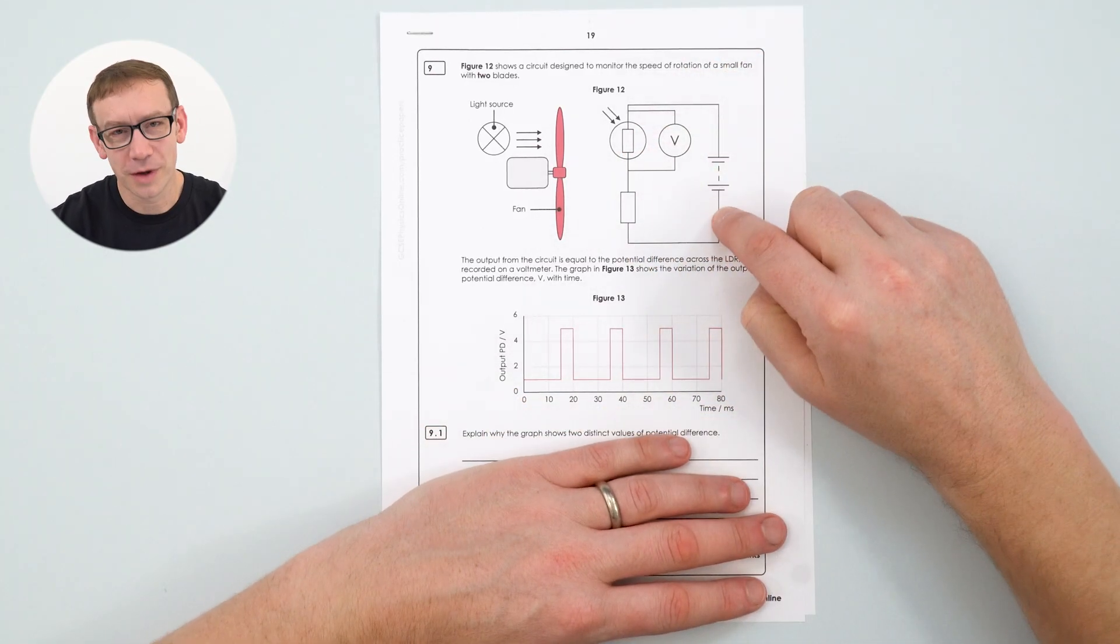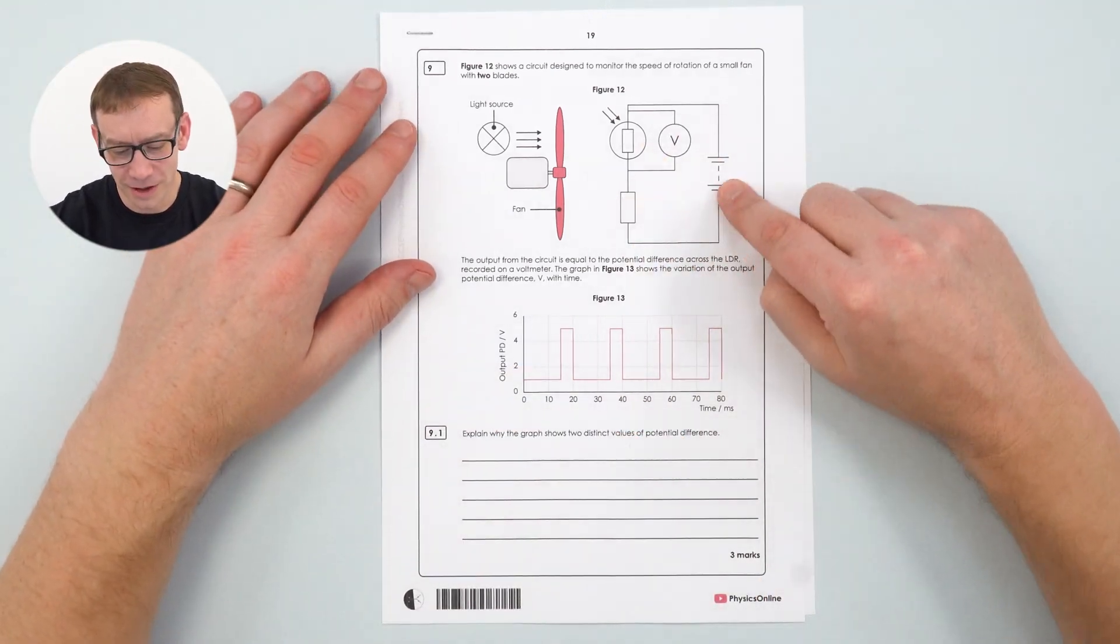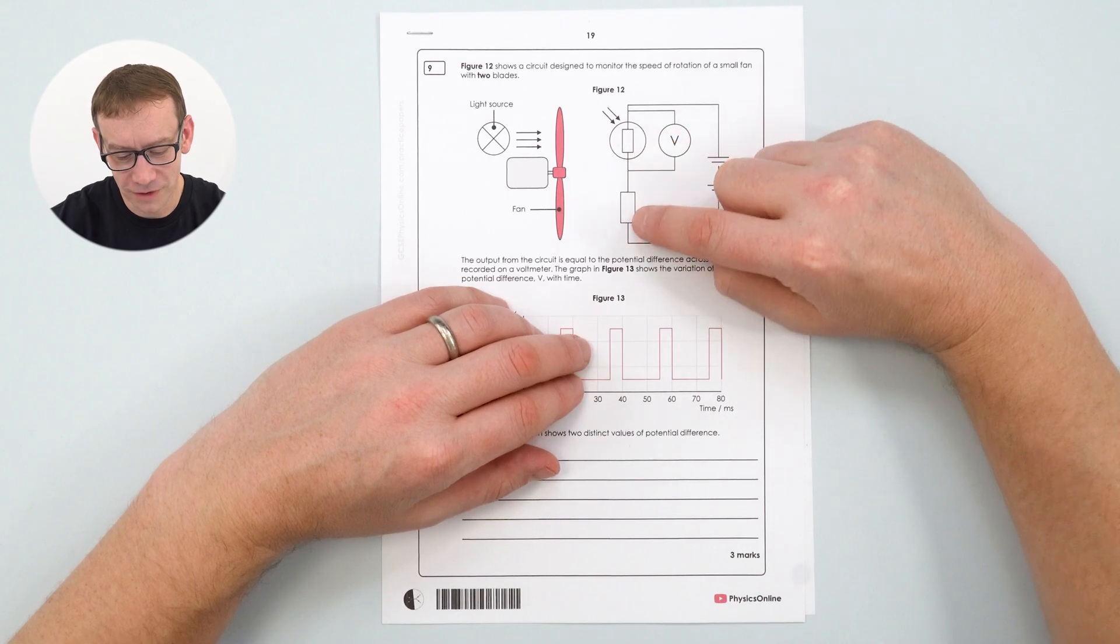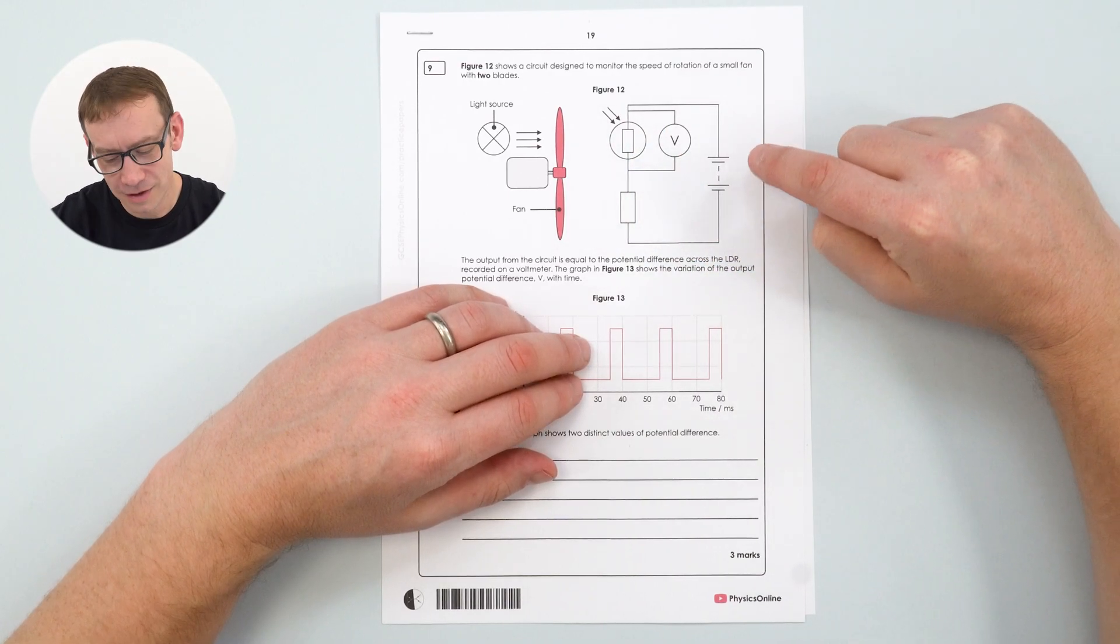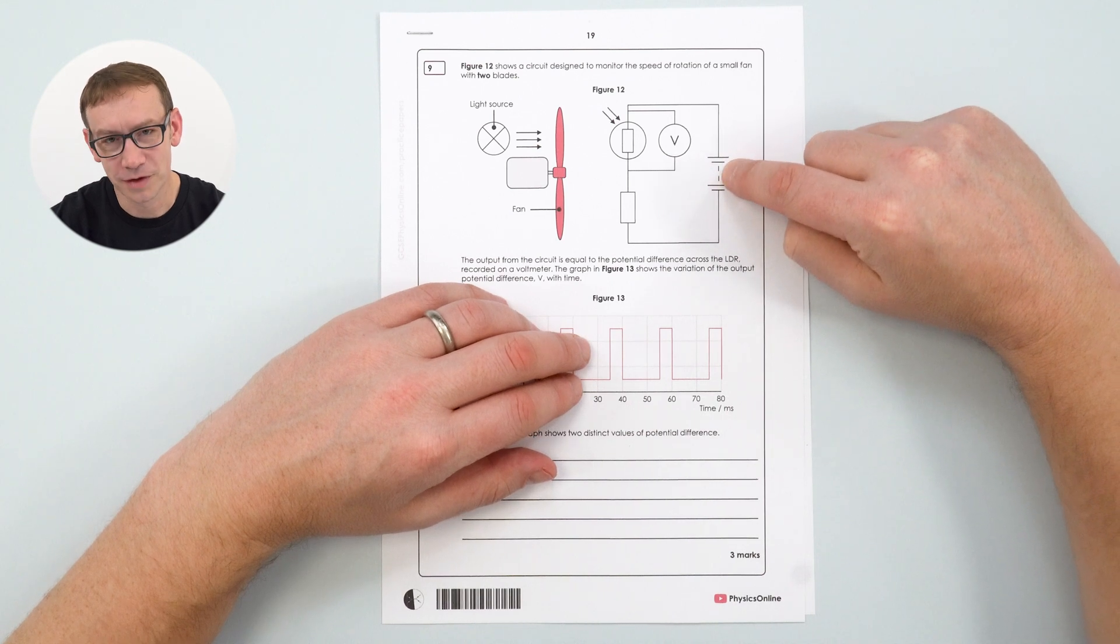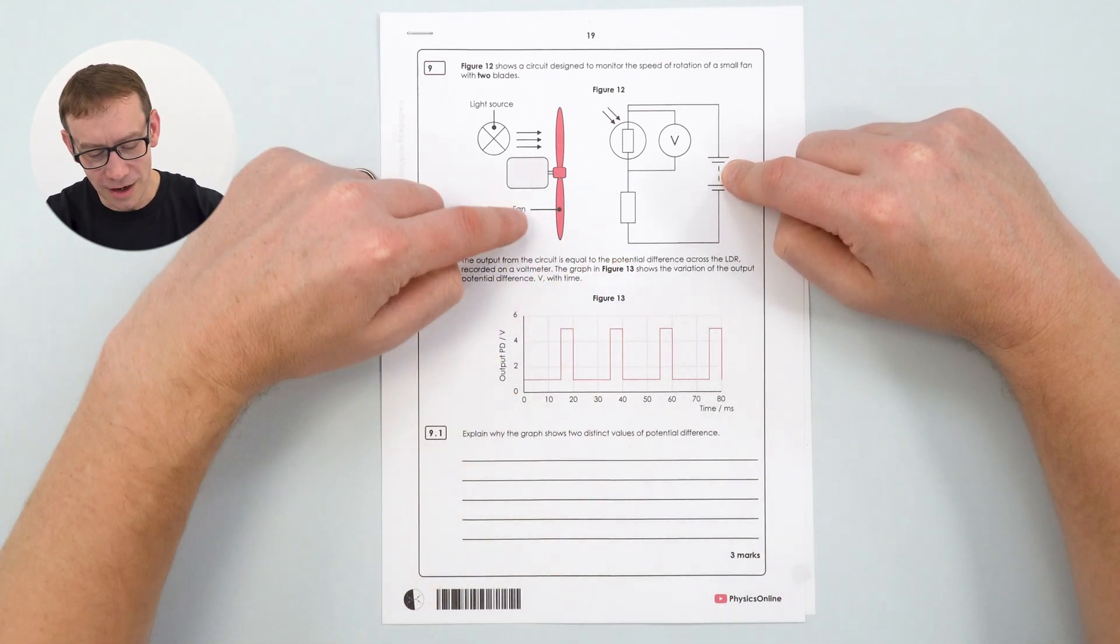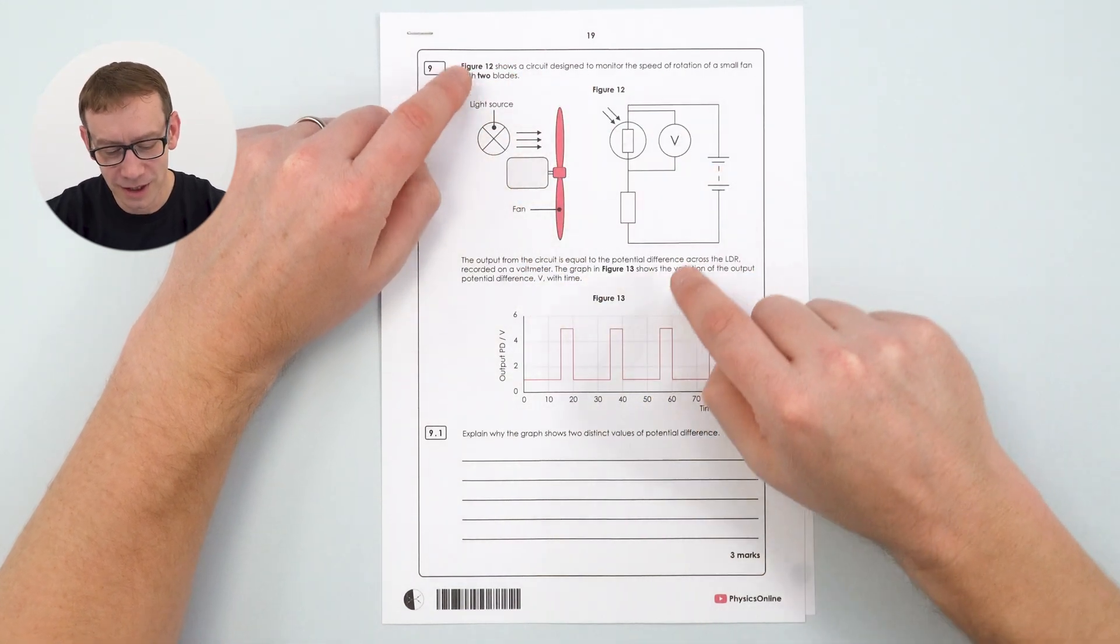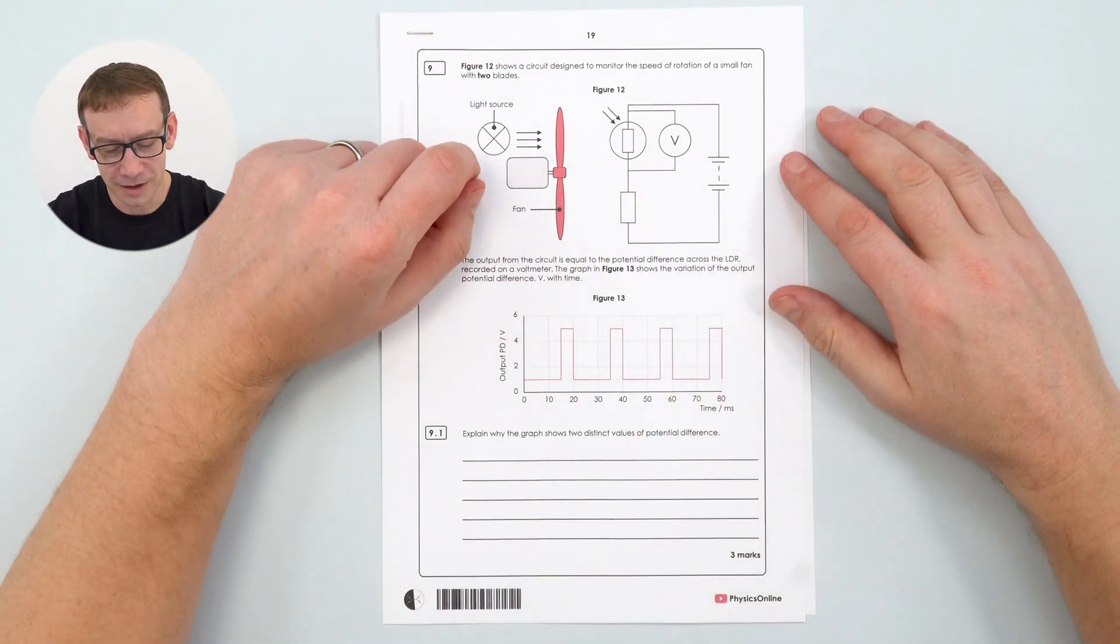So initially it just looks like a question about electricity. We have an electrical circuit. If anybody is doing A-level you'll realize that this is actually what we call a potential divider circuit and we have two different resistors that divide the electrical potential of this power supply. We then have a fan that's got two blades and that's important and that's why I've highlighted it in the question and then we have a light source which is shining past the fan blade.